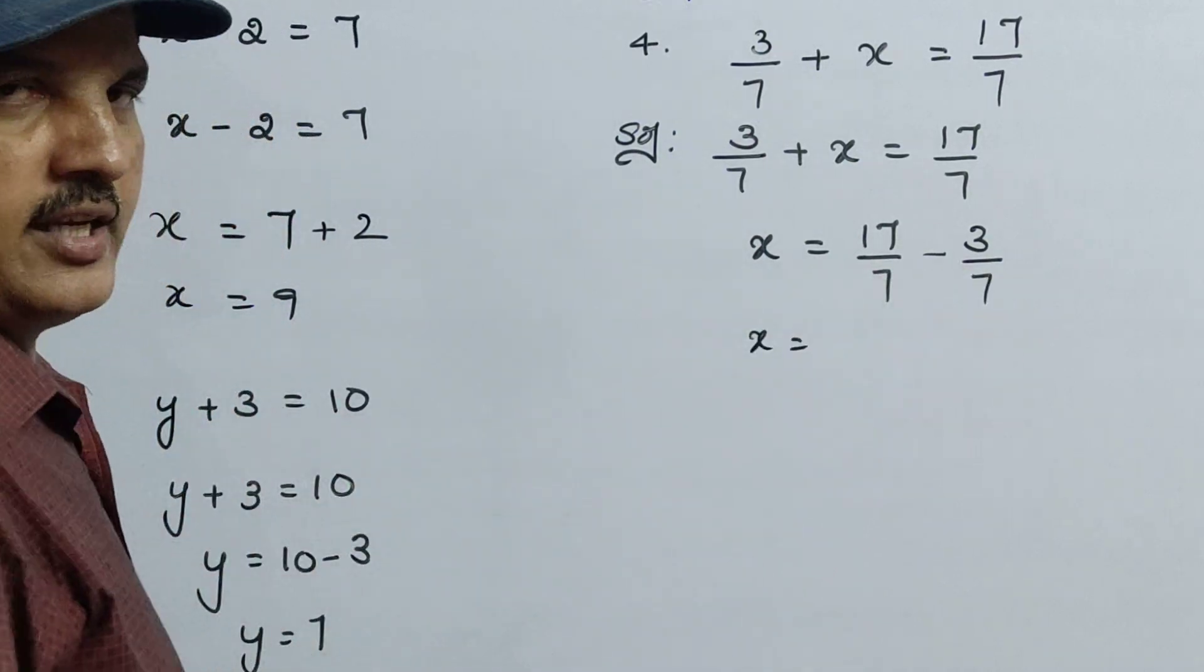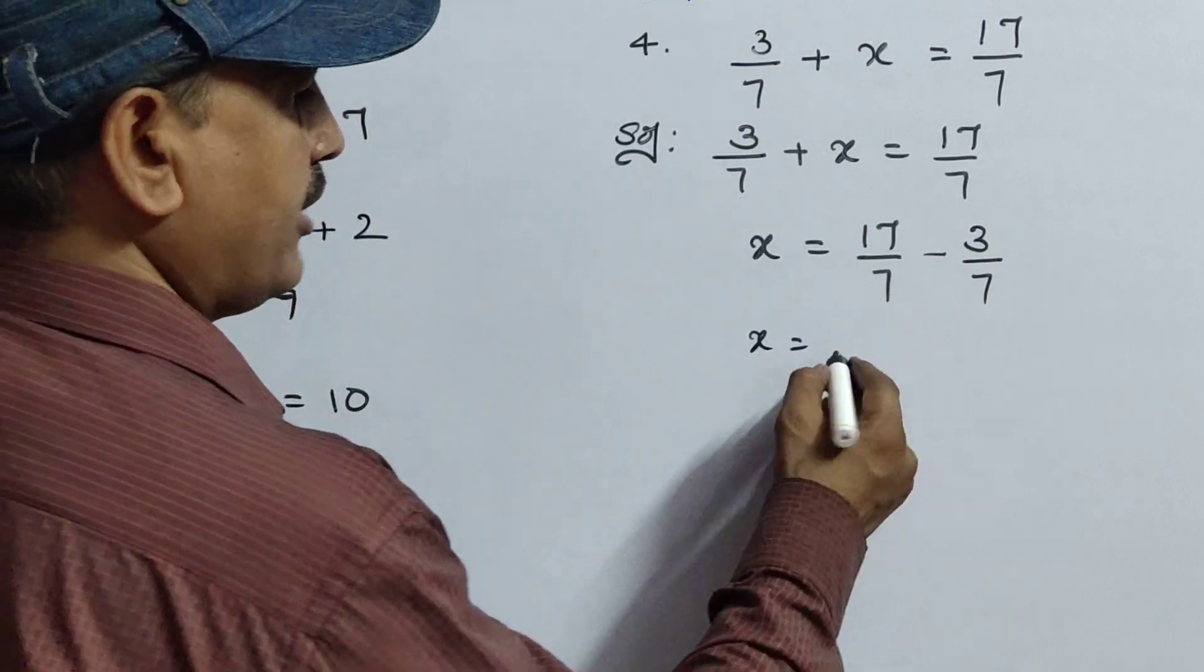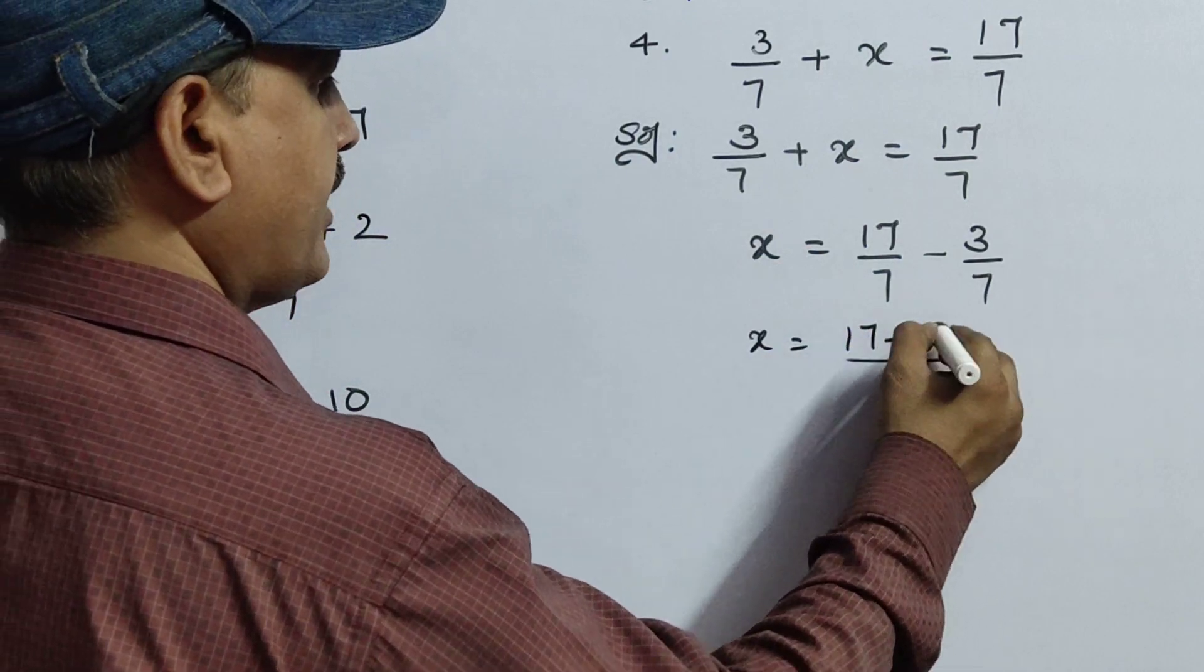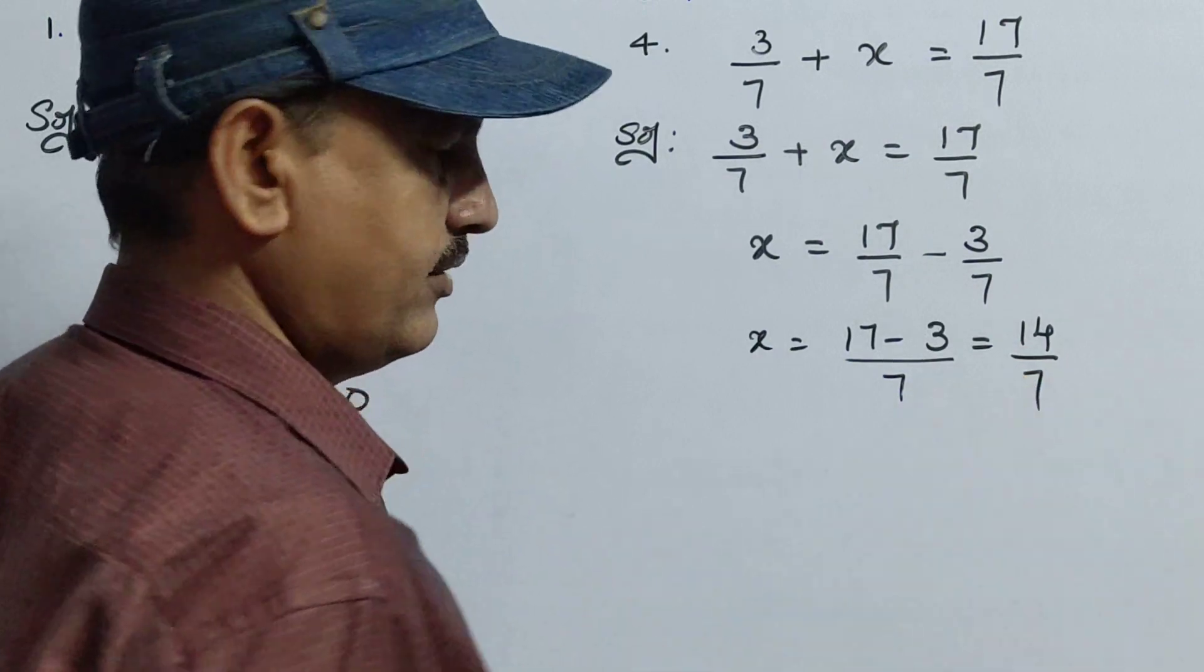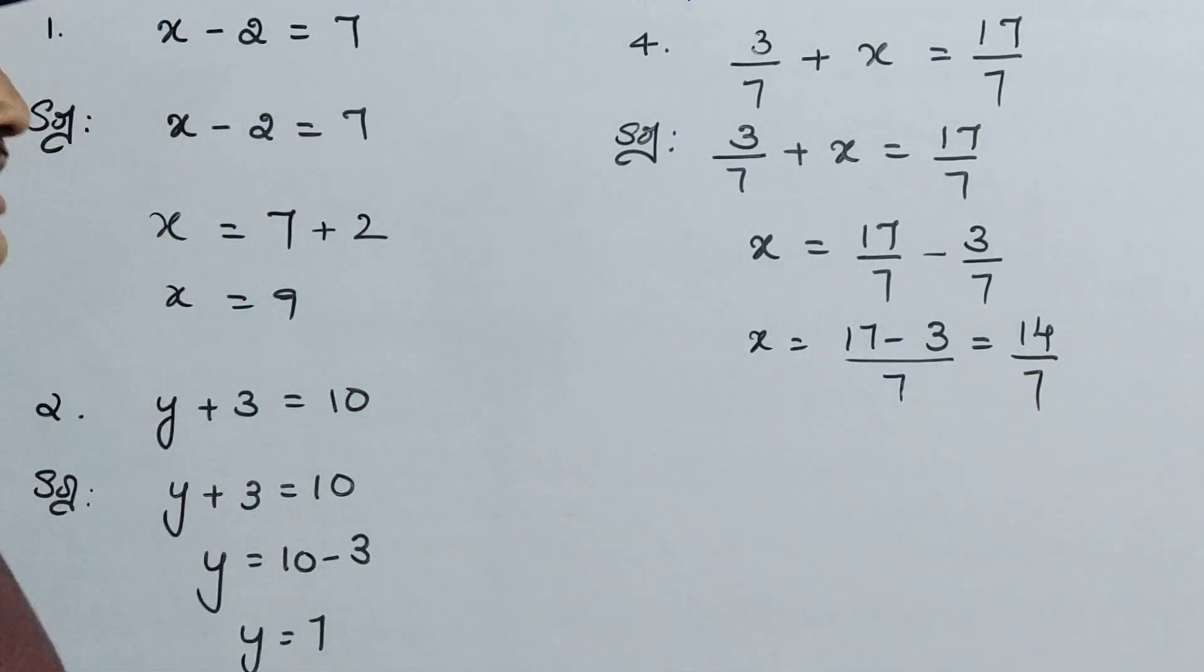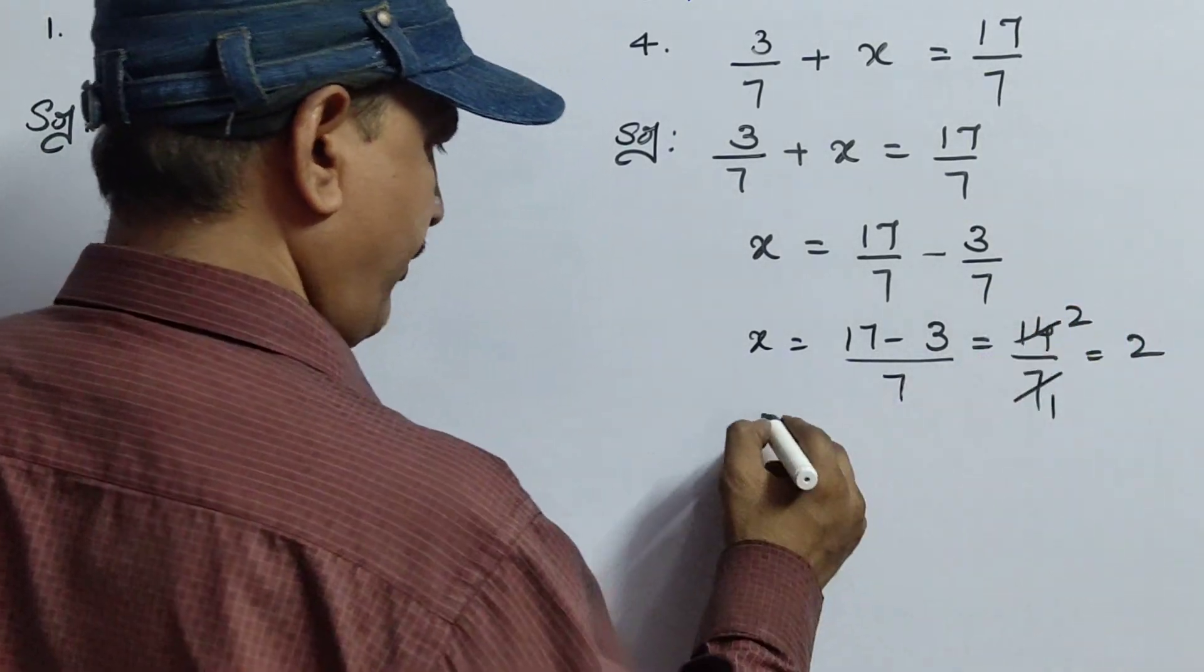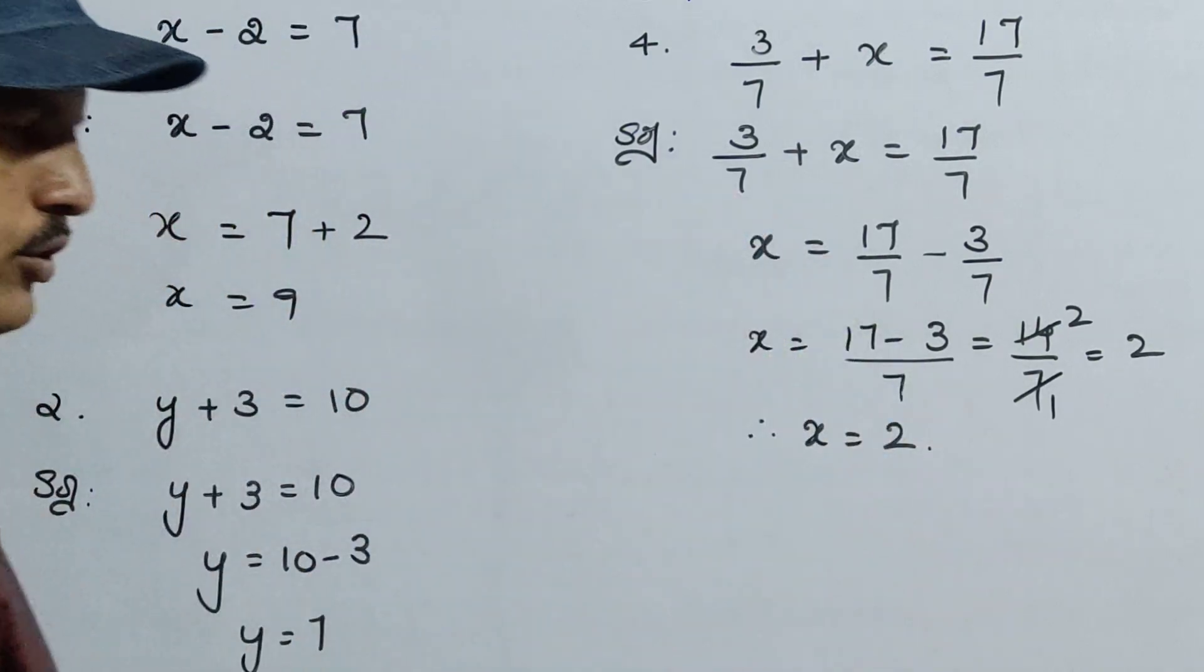Here it is minus means it will go as a plus only. So x equals to LCM. Both LCM are same, both the denominators are same. So no need to find LCM, you can do directly. 17 minus 3, that is 14 by 7. So if any cancellation chances is there means we can do cancellation. 7 ones, 7 twos. So 2. Therefore x equals to 2 is the solution.